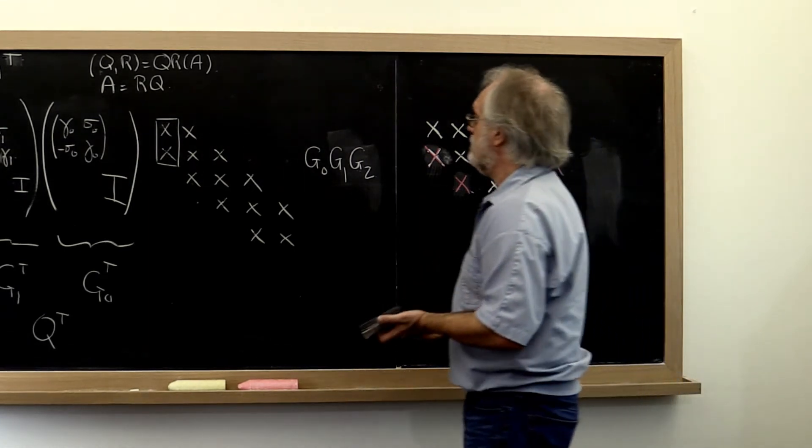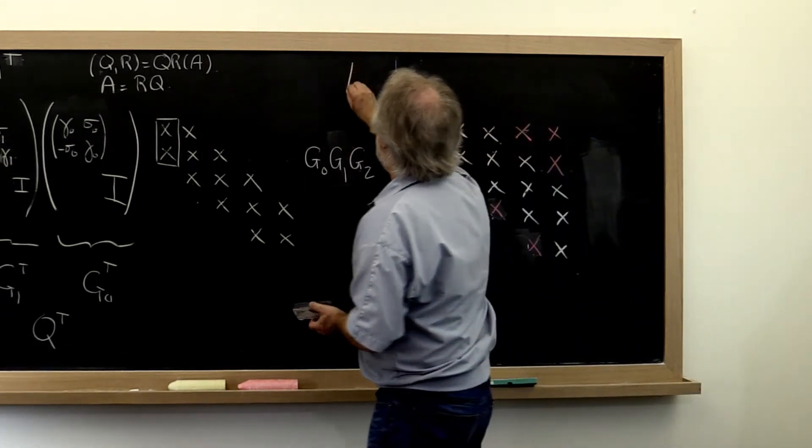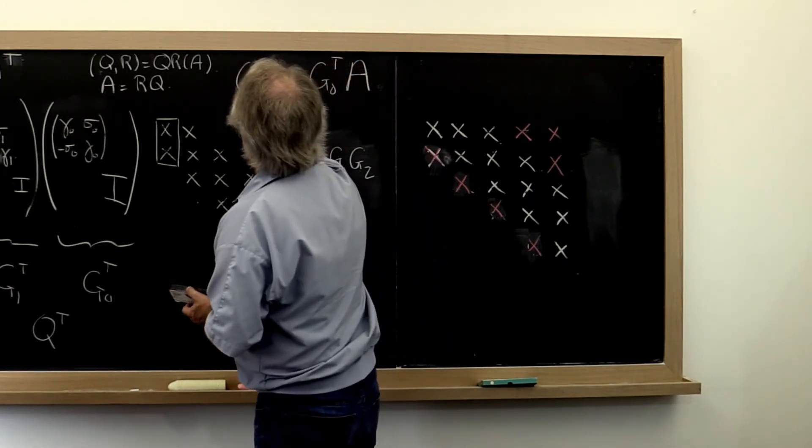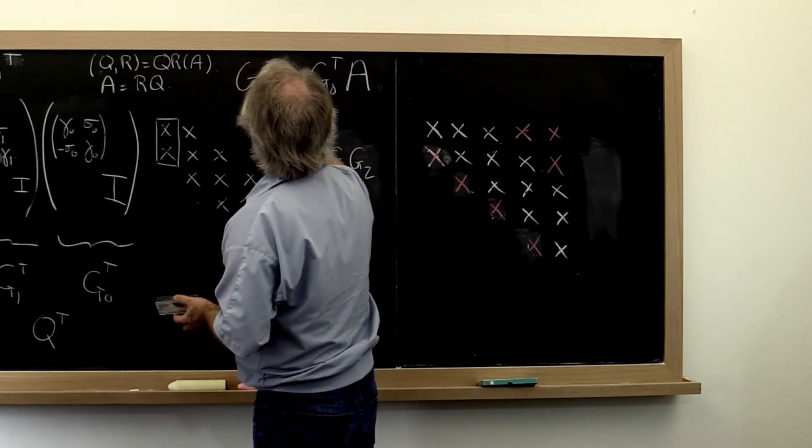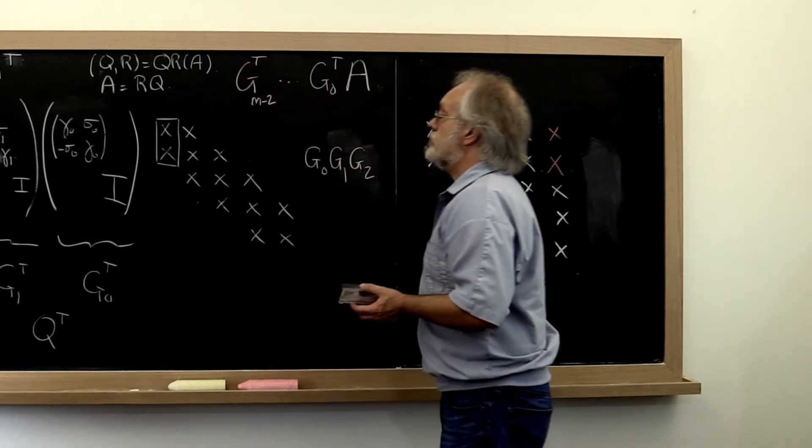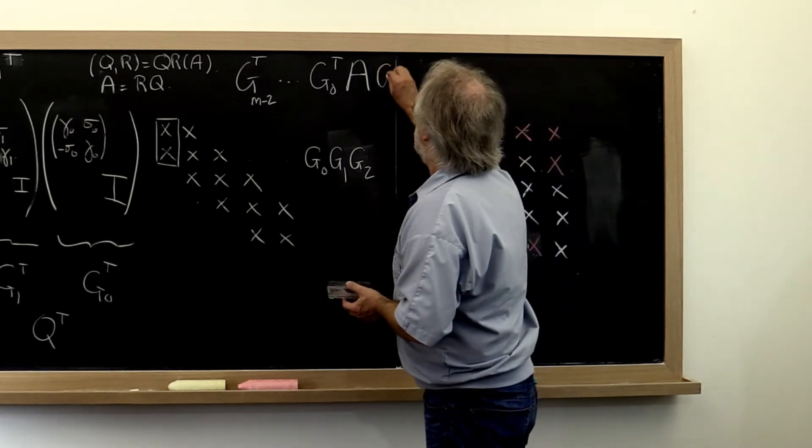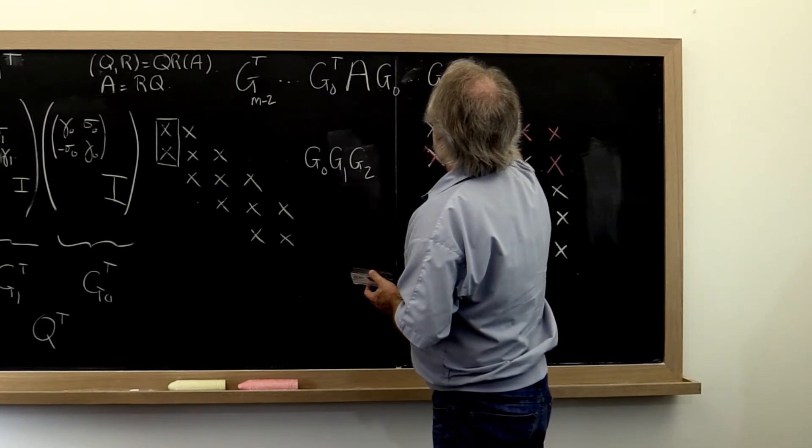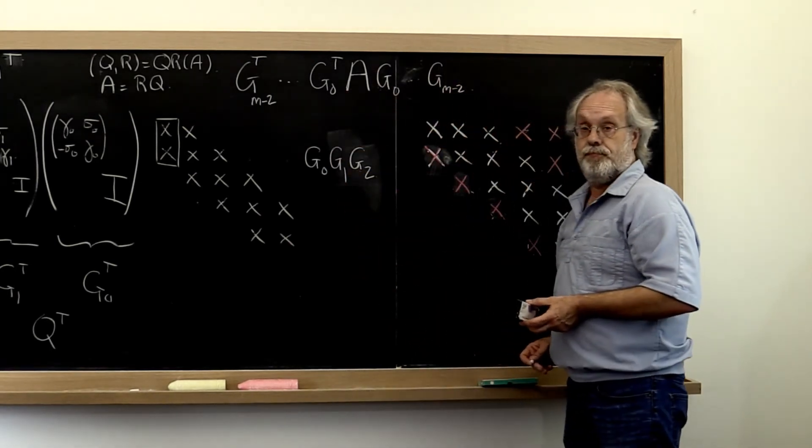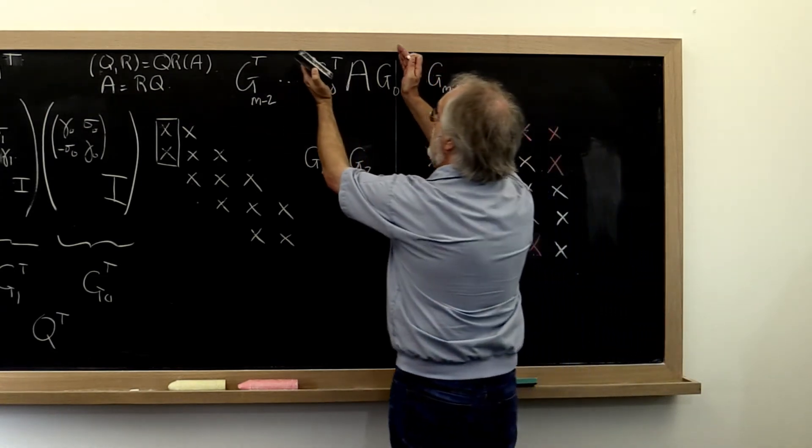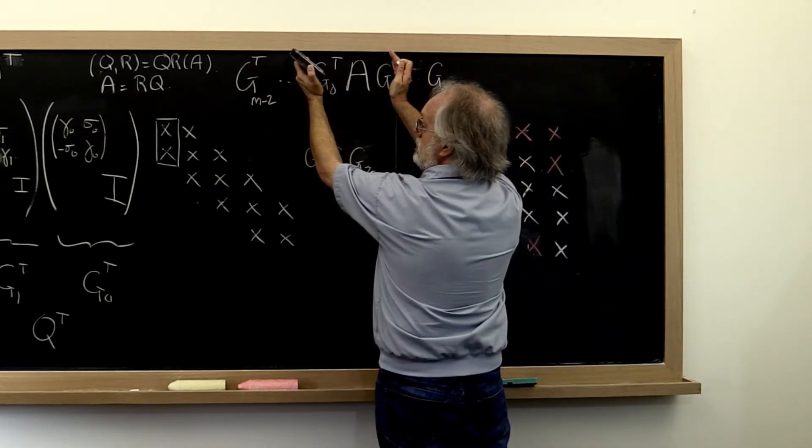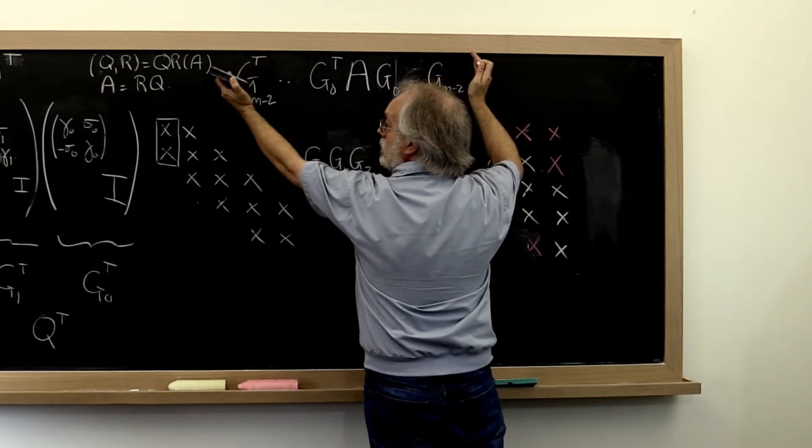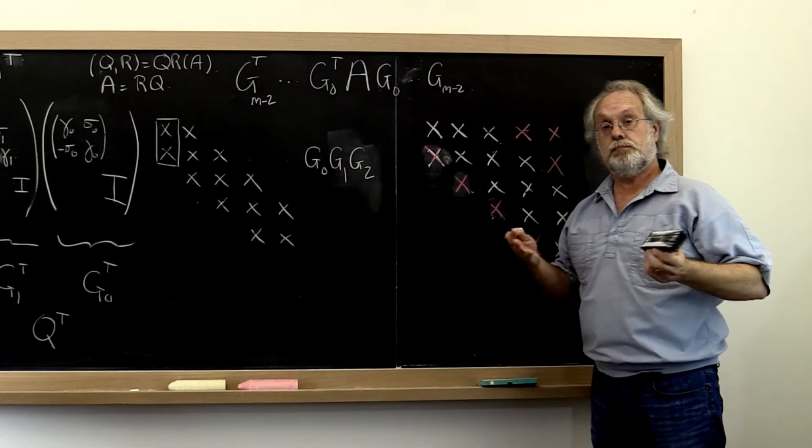So what we have done is we've taken our matrix A and we now have in effect applied G0 transpose through G M minus 2 transpose from the left and then G0 and so forth through G M minus 2 from the right. But what you notice is that this matrix remains symmetric, the next matrix remains symmetric, and so forth. So the resulting matrix must be symmetric.